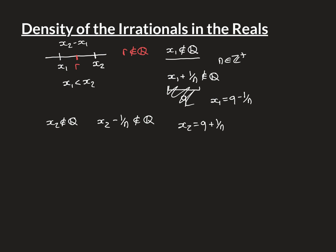We now have the final case where neither x1 nor x2 is irrational — i.e., both are rational. We can handle this with the help of the square root of 2. The square root of 2 is roughly 1.41, so dividing by 2 gives something around 0.7 — greater than 0 and strictly less than 1. What we consider is the number x1 plus the square root of 2 over 2, times the length of the interval x2 minus x1.